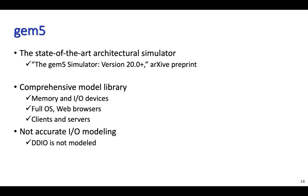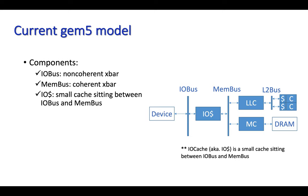We identified that GEM5 does not model DDIO, which can render simulation results that involve I/O accesses inaccurate. In the remaining of this presentation, I will discuss how we enable DDIO in GEM5 and show some experimental results collected from our enhanced GEM5. Before I discuss our DDIO modeling in GEM5, let me explain the interactions between memory, CPU, and I/O devices in the baseline GEM5 classic memory system.